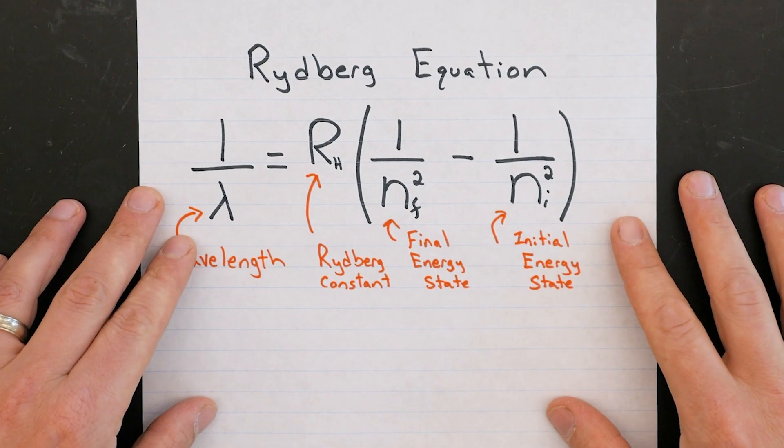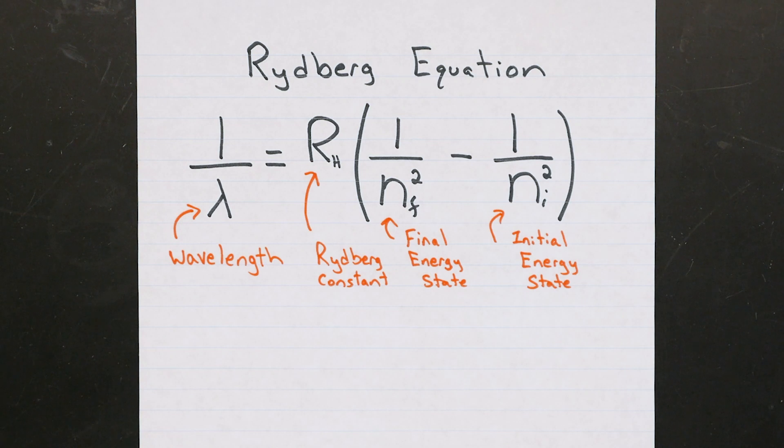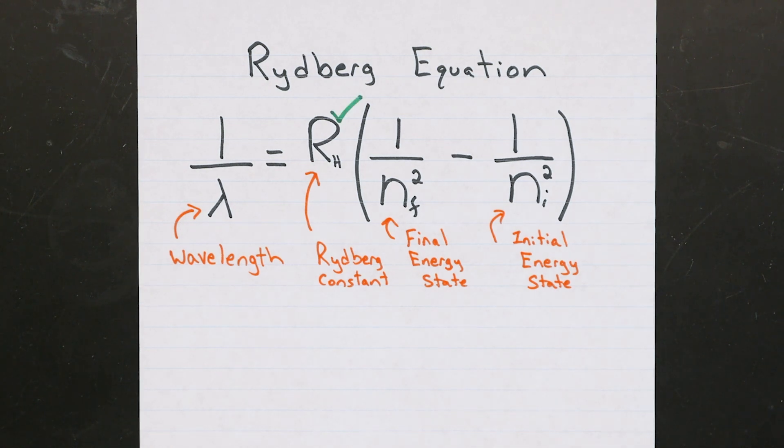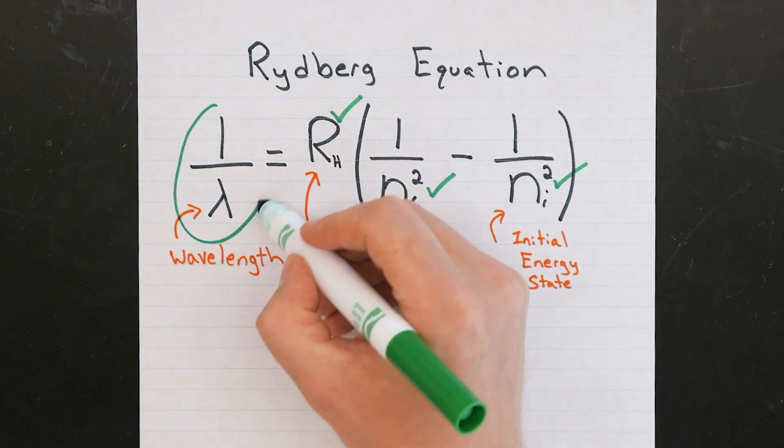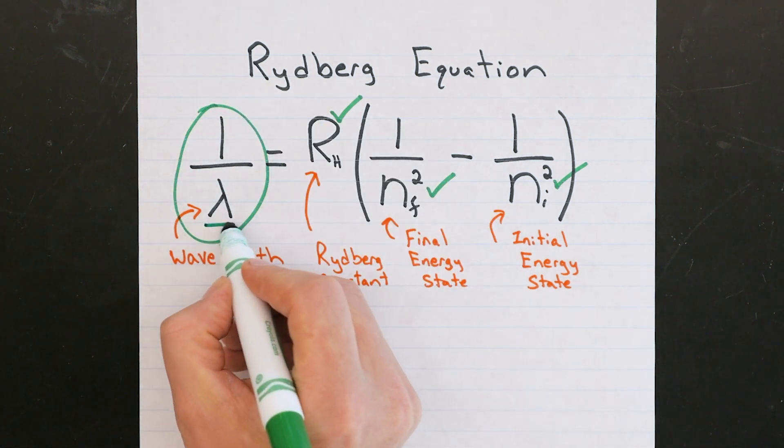Finally, you'll use the Rydberg equation to double-check your measurements for the hydrogen atom spectral lines. The value of the Rydberg constant is given, and so are the combinations of atomic energy states that correspond to the spectral lines you observed. You just need to solve for the one over lambda part, and then invert it by dividing one by the number you get.